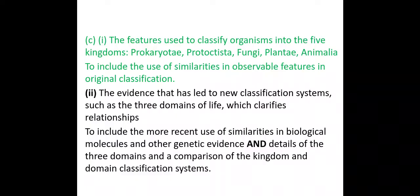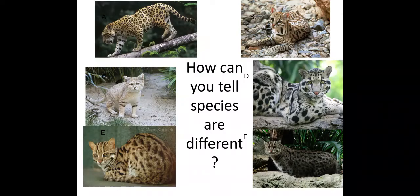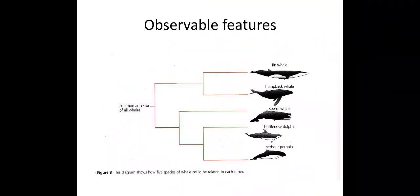Looking at these different cats, we can tell that they're all different species because of their observable features. We can physically see that the physical features are different within those cats.